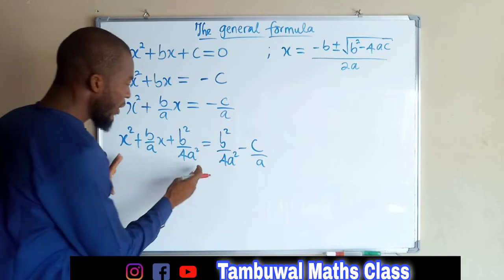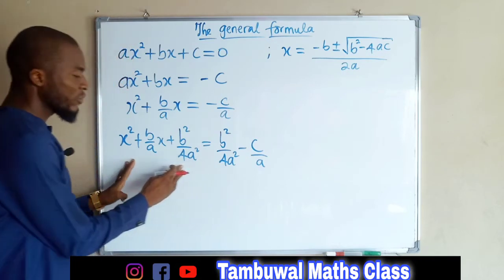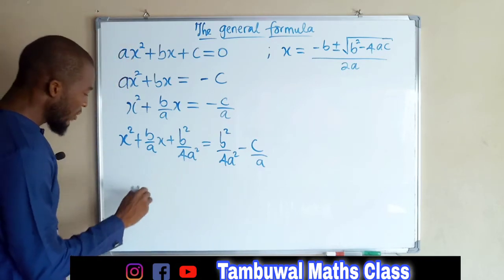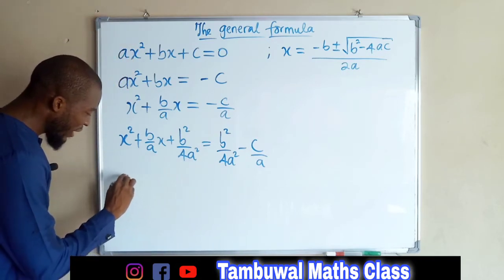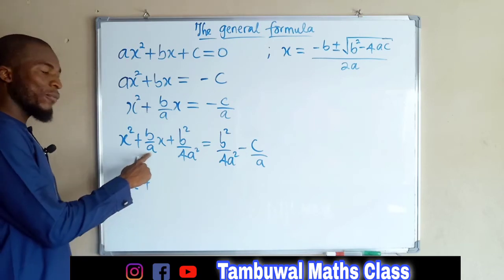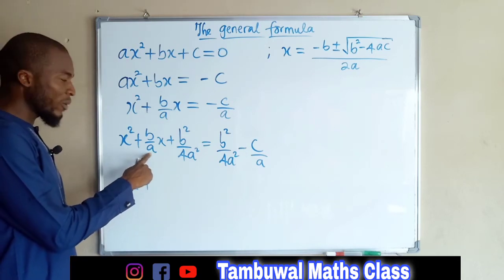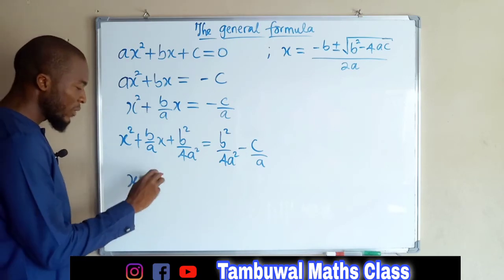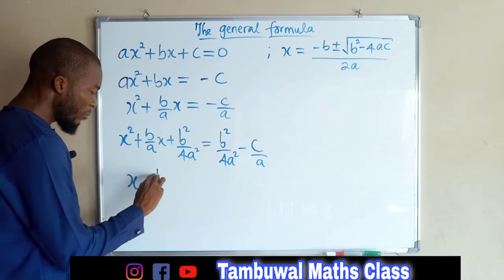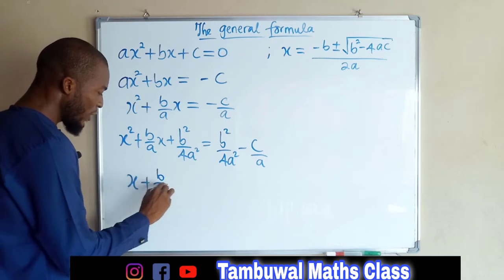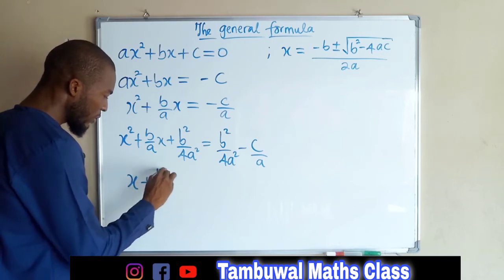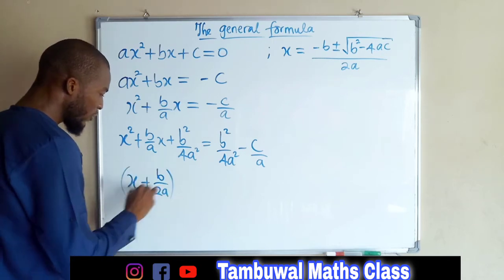Now we are free to factorize the left-hand side, which is going to be x plus half of the coefficient of the middle term — that is, b over 2a — all squared.